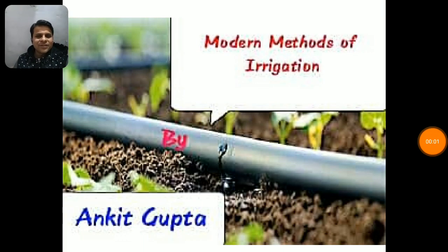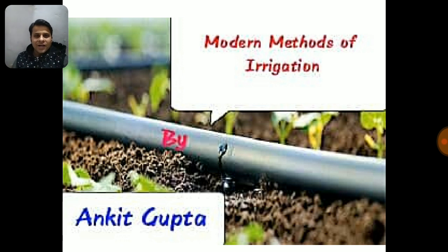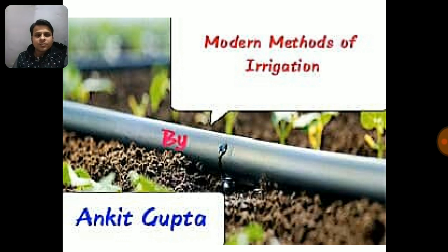Hi everyone, this is Zangit Gupta. Yesterday we discussed canal irrigation and today we are going to discuss modern methods of irrigation. We have previously discussed some traditional methods like tank irrigation and well irrigation. Today we will discuss three major modern methods: furrow irrigation, sprinkler irrigation, and drip irrigation.